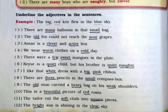Underline the adjectives in the sentences. In the first sentence, many and small are adjectives. Second sentence: old, sore. Third one: clever, active. Fourth: warm, cold. Fifth: few, sweet. Sixth: quite, naughty. Seventh: white, big, pink. Eighth: three, small.